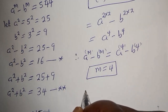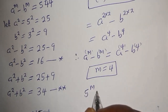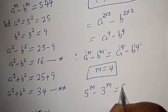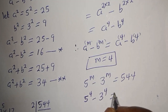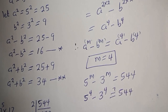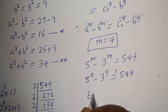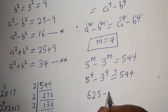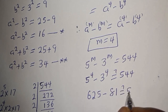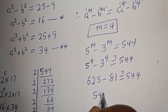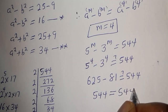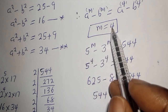Let's confirm: 5 raised to power m minus 3 raised to power m equals 544. When m equals 4, we have 5 raised to power 4 minus 3 raised to power 4, which is 625 minus 81. This equals 544, which satisfies the given equation. Therefore m equals 4 is verified.